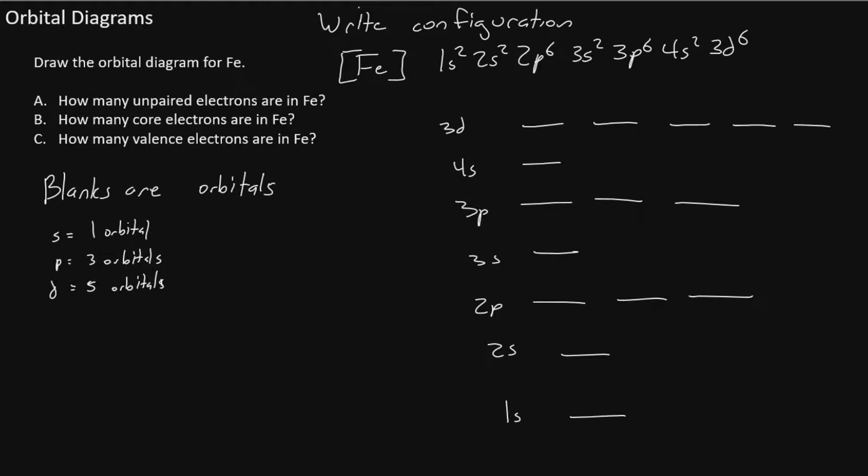Now our first term says 1s2, so 1s gets two electrons. And remember that one must point up, one must point down. We can never have two electrons pointed the same direction. 2s also has two electrons. We have 2p6, so we place six electrons in the P.